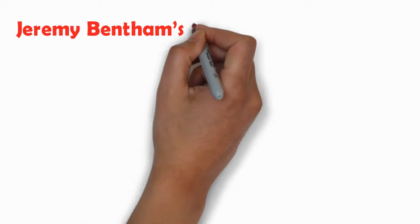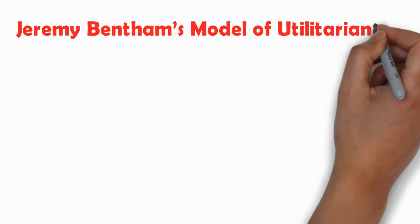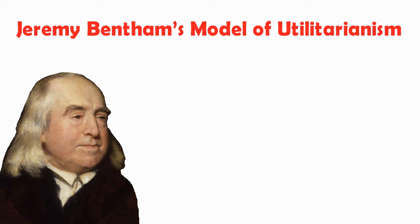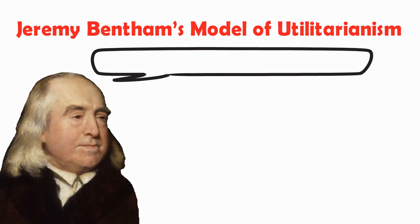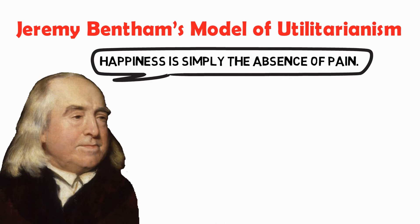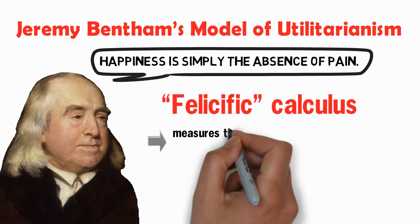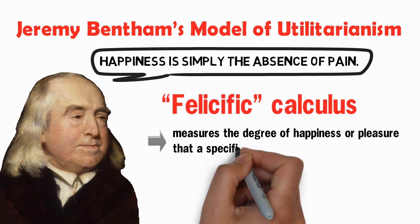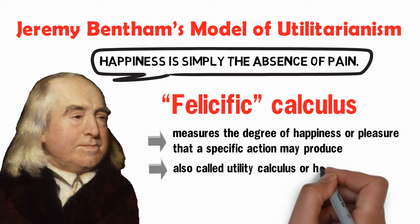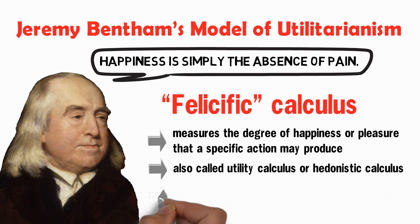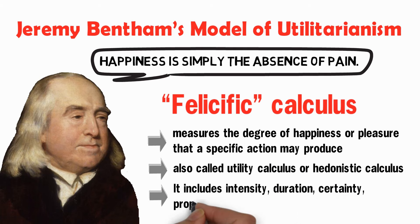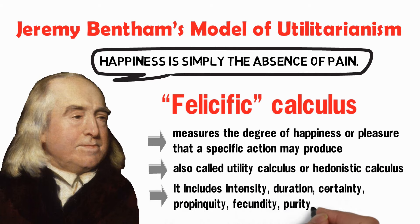Now let us discuss Jeremy Bentham's model of utilitarianism. How does Bentham view happiness? For Bentham, happiness is simply the absence of pain. Bentham introduced the philosophic calculus to measure the degree of happiness or pleasure that a specific action may produce. The philosophic calculus is also called the utility calculus or hedonistic calculus. It includes intensity, duration, certainty, propinquity, fecundity, purity, and extent.